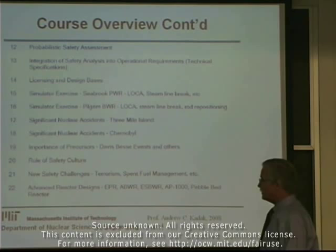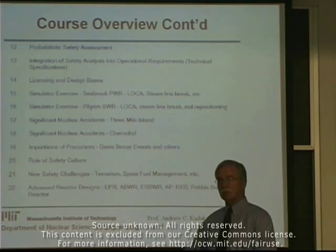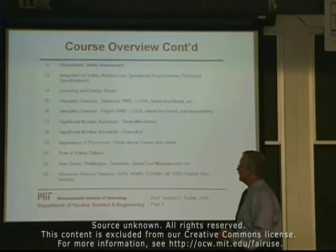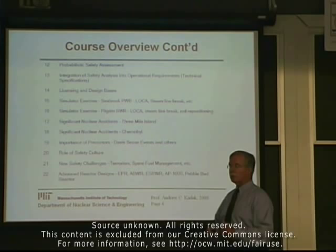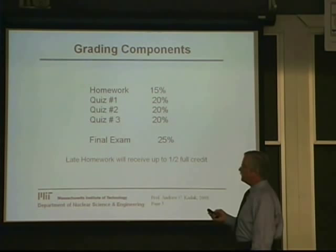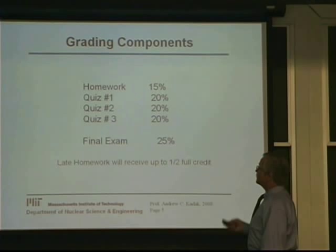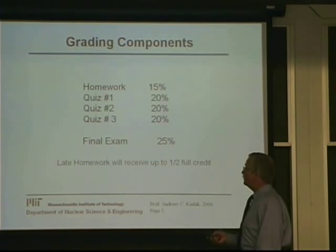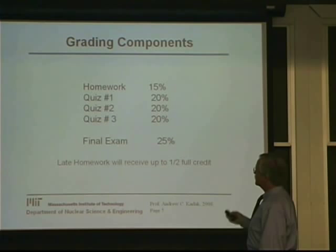Hopefully this will be an interesting course. We're going to cover a lot of ground and it's going to go pretty fast, but I think once you're done, you will be well versed in operational reactor safety. The grade structure is: homework will be 15% of the grade, and there are three quizzes scheduled — though there might only be two — and then the final exam. If we only have two quizzes, we'll apportion the 60% amongst two quizzes. Late homework will receive half of the full credit.